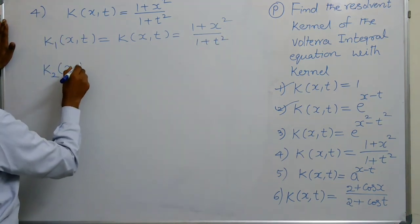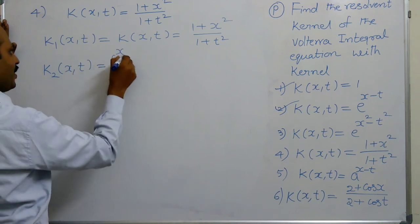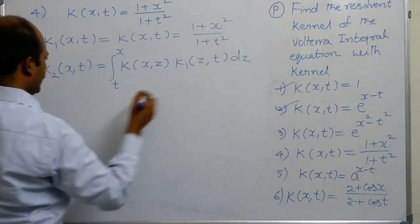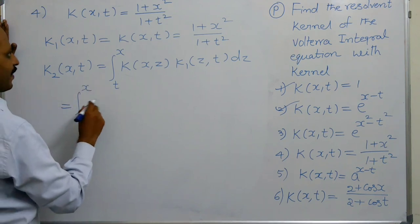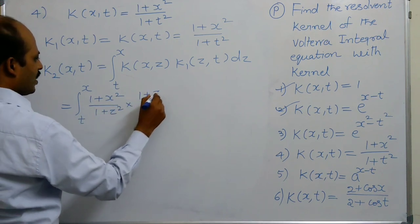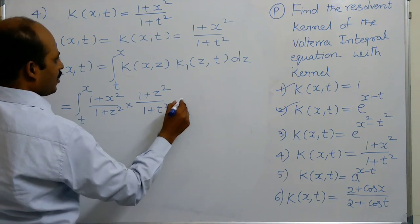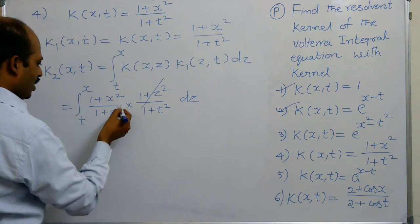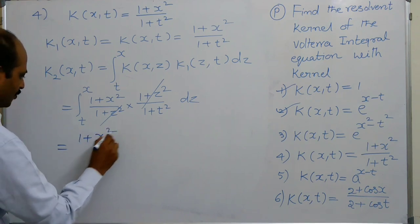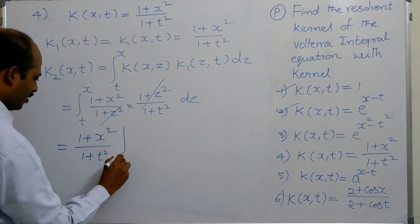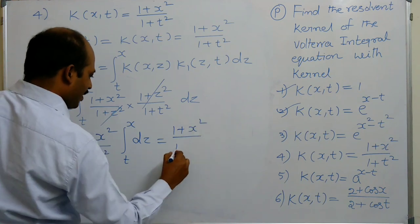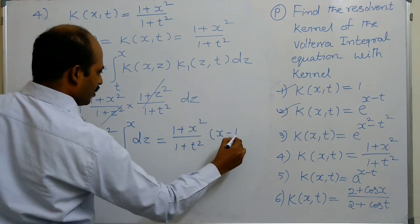K1 of X, T equals (1 + x²)/(1 + t²). K2 of X, T equals integral from T to X of K(X, Z) times K1(Z, T) dZ, which is integral T to X of [(1 + x²)/(1 + z²)] times [(1 + z²)/(1 + t²)] dZ. The (1 + z²) terms cancel, leaving (1 + x²)/(1 + t²) times integral T to X dZ, giving K2 = (1 + x²)/(1 + t²) times (X minus T).